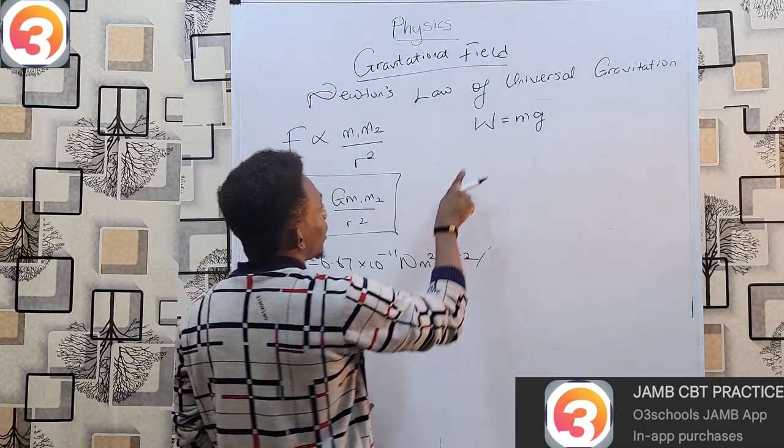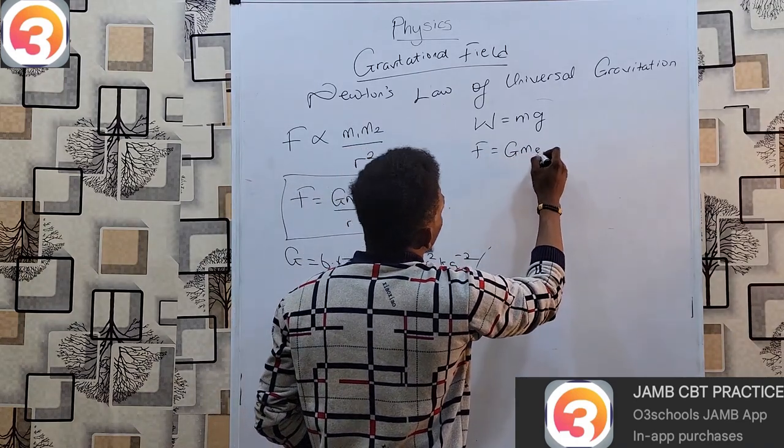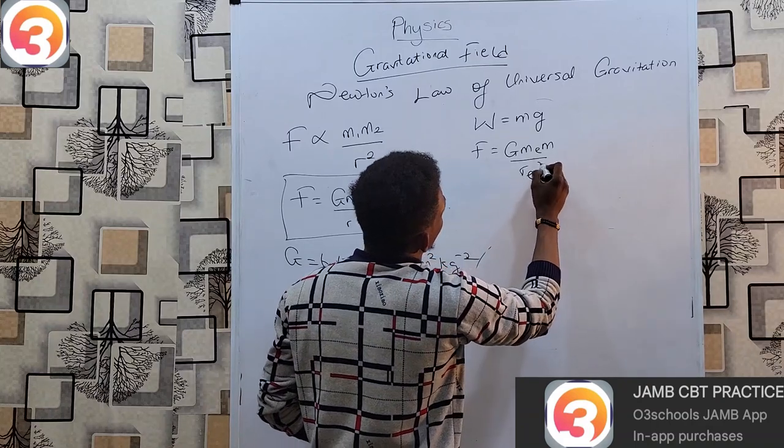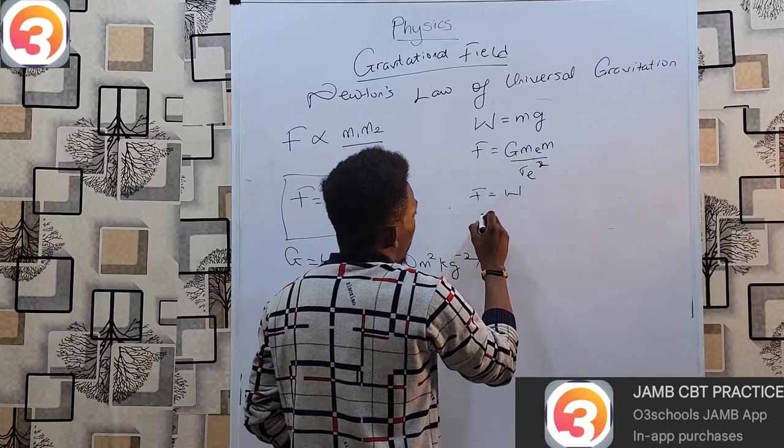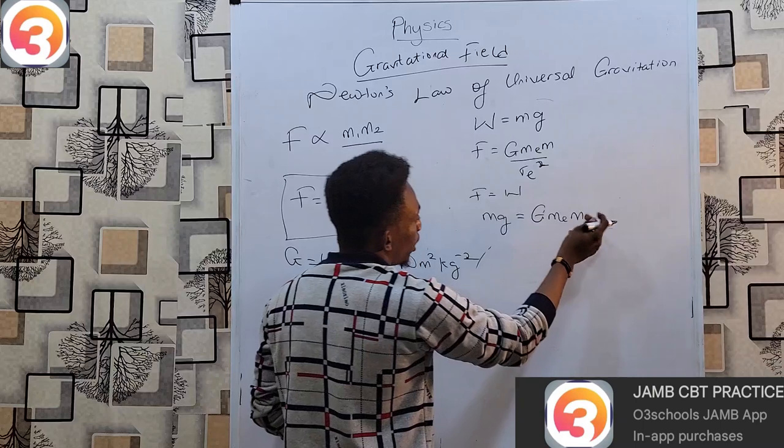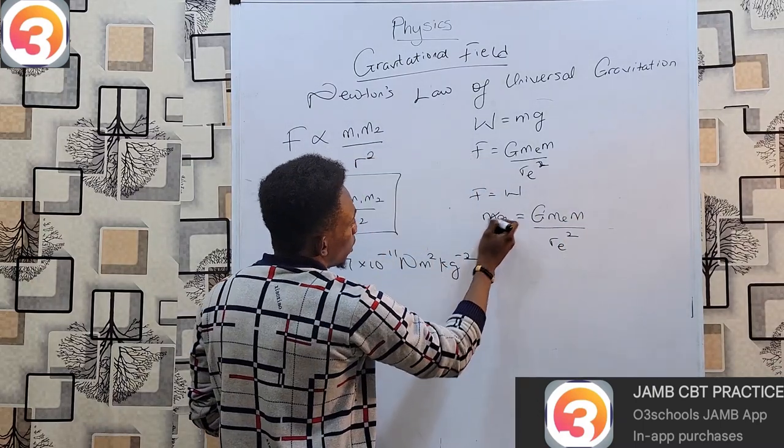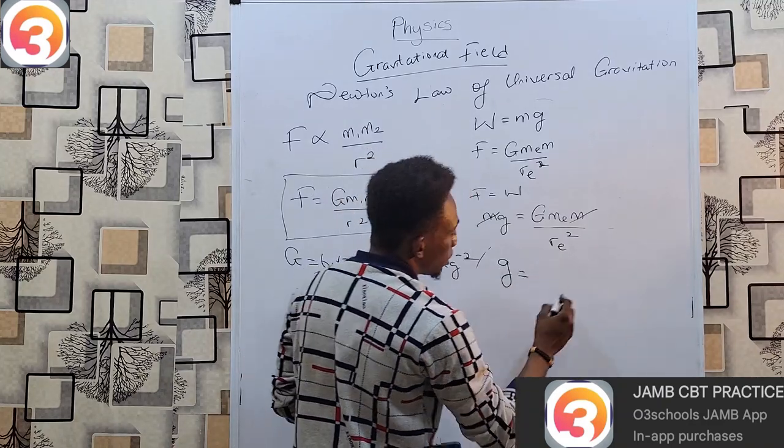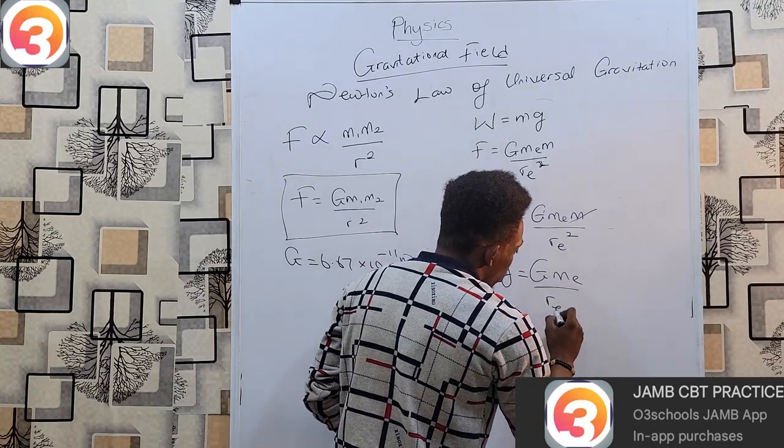However, we must remember that this force between the earth and the human is equal to G mass of earth times mass of the object over radius of earth squared, and this we know is equal to the weight. That means that mg = G Me m / re². If m cancels m, we know that acceleration due to gravity can then be calculated as gravitational constant times mass of earth over radius of earth squared.